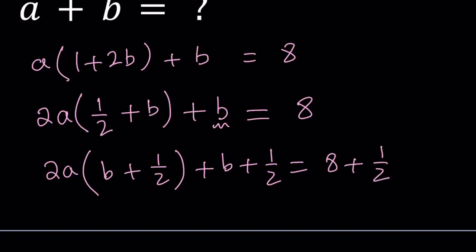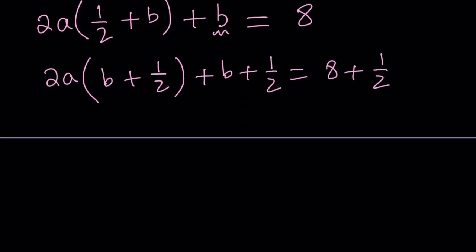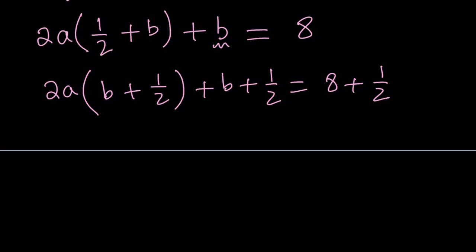By the way, there is an alternative approach. If you don't want to go through this, I'll briefly talk about it. Now we have b plus 1 half, and obviously to find a common factor, we can go ahead and write this as 1 times b plus 1 half. That is equal to 8 plus 1 half, which can be written as 17 halves.